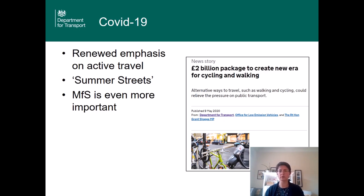There have also been more recent announcements about encouraging local authorities to give over road space to cafes and restaurants and encouraging businesses to put tables and chairs on the pavement, appropriately licensed and done in a way that doesn't create an obstruction, so that they can operate in a socially distant way. All of this is aimed at creating the economic benefits that good street design can provide, and an updated MFS needs to be part of this as we look to the future and try to lock in some of those benefits to a new normal.